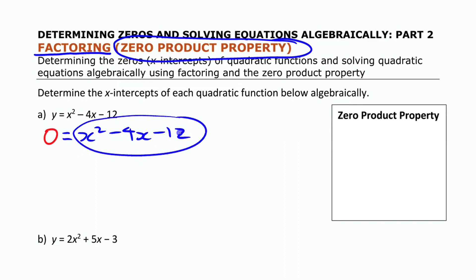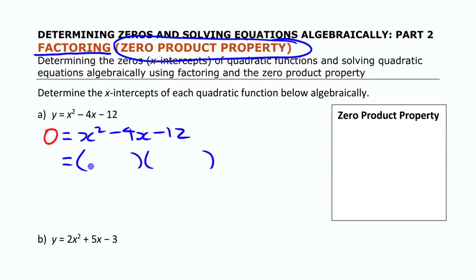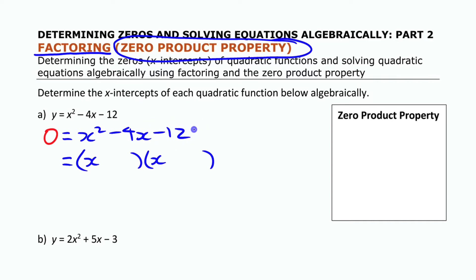We're going to factor this using binomial factoring. This does not have a common factor, so we try to break it into two binomials, since it follows the pattern of something squared, something x, and a constant. The two binomials start with x because of the x² term. We look at the last term to get an idea of what to try, then check whether the middle term comes out right.